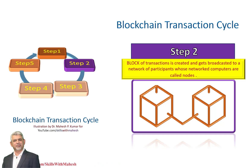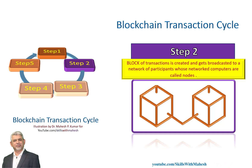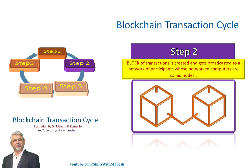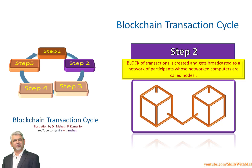Step 2 of the blockchain transaction cycle: the block of transactions gets broadcasted to a network of participants. The installed app on the cell phone plays a vital function here, as it creates the transaction and signs it with the private key of the existing owner of the ticket. In this example, a ticket of an event is actually a block — or in other words, the transaction of a ticket purchase and sale is a block — and gets broadcasted to a network of participants whose networked computers are called nodes.